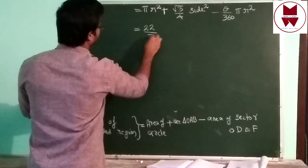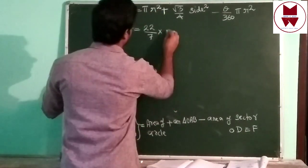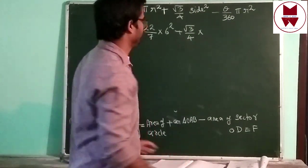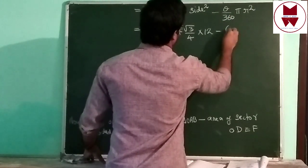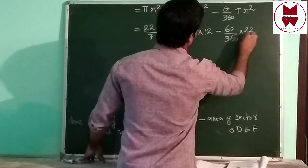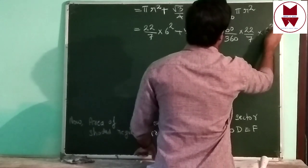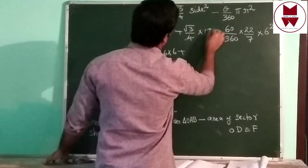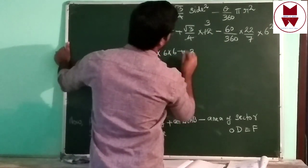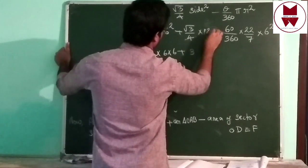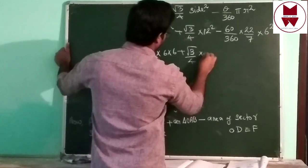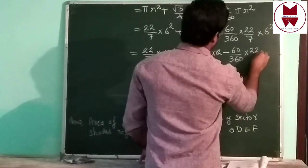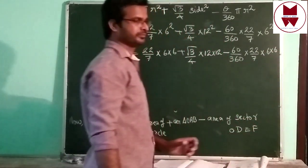Substituting: (22/7) × 6² + (√3/4) × 12² − (60/360) × (22/7) × 6². R² = 36, side² = 144. For the equilateral triangle area: (√3/4) × 144 = 36√3. For the sector: (1/6) × (22/7) × 36 = 132/7.